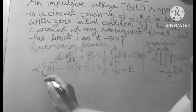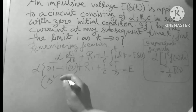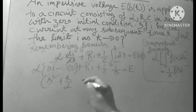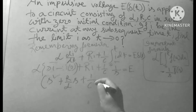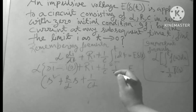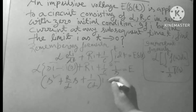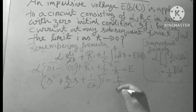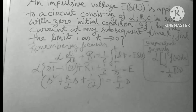After simplification, we get: (S² + (R/L)·S + 1/(CL))·Ī = E/(L·S). This is the transformed equation in the Laplace domain after applying the initial conditions.